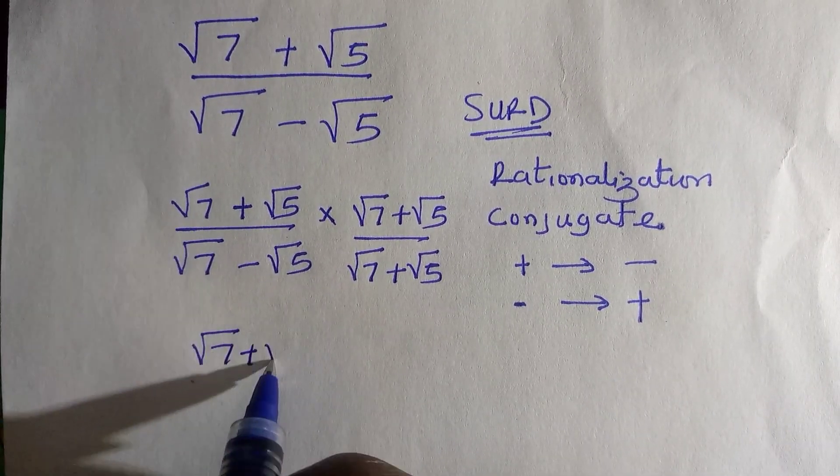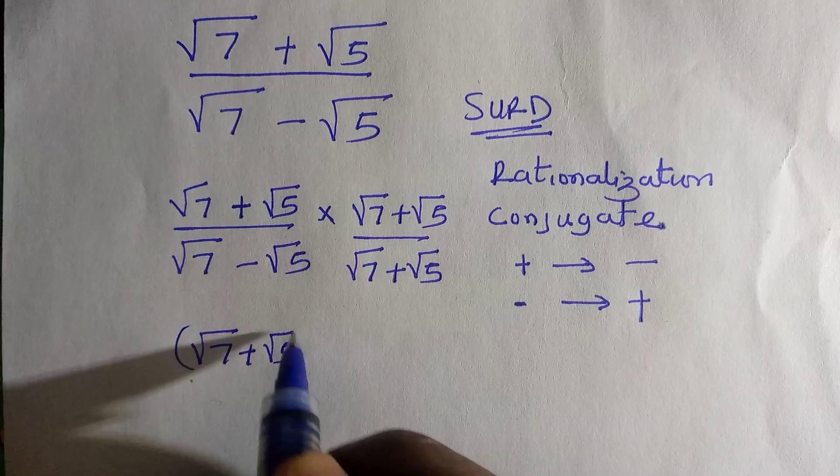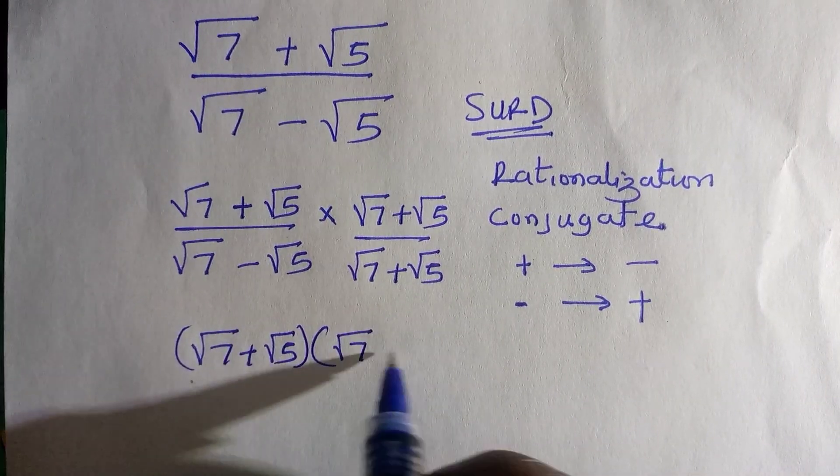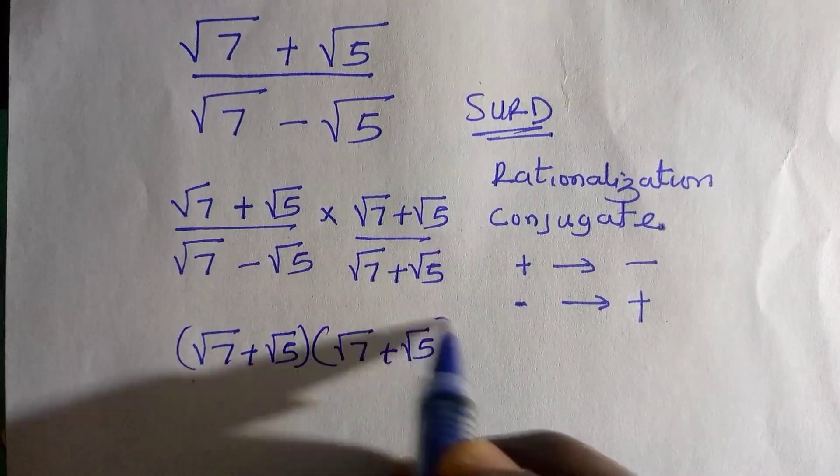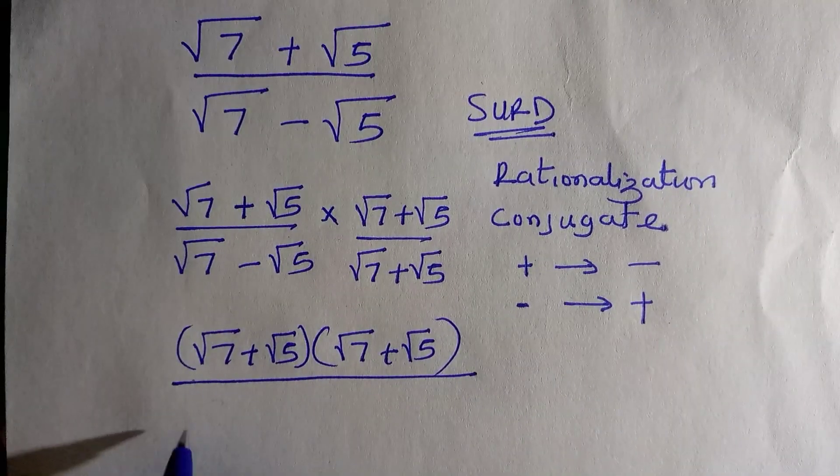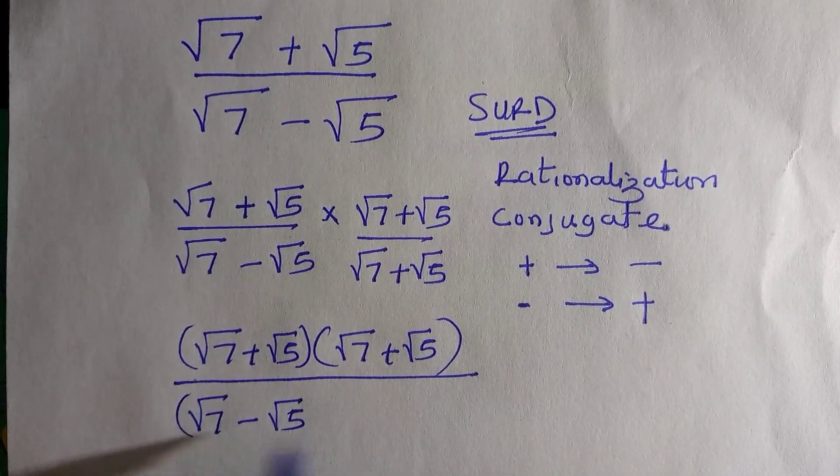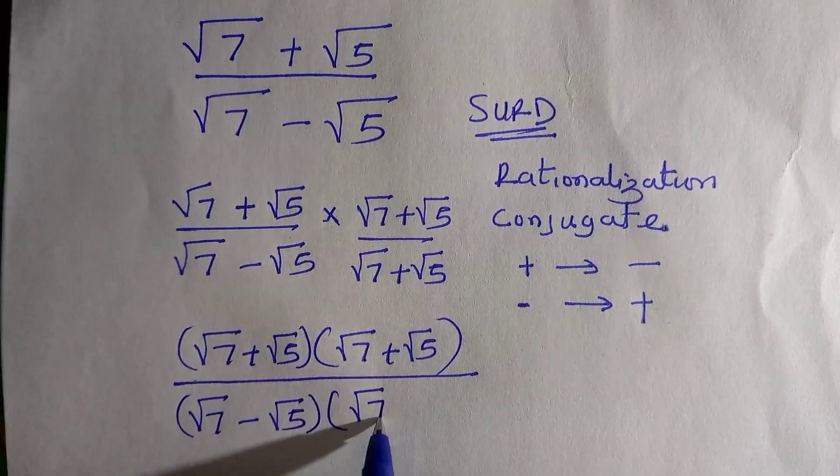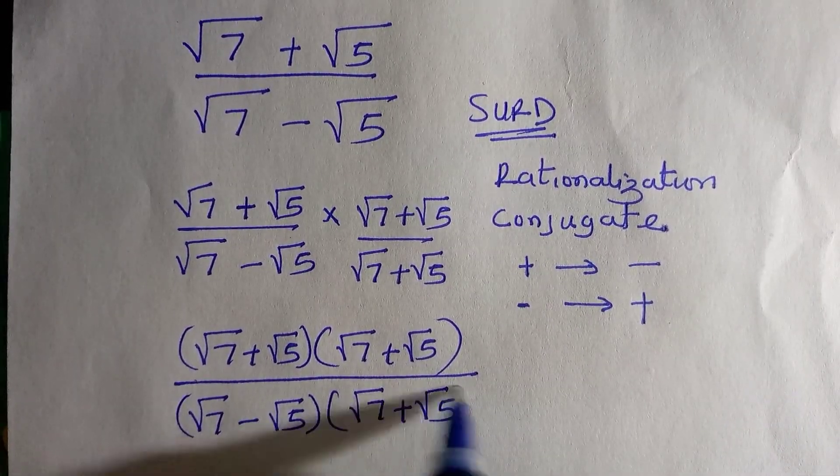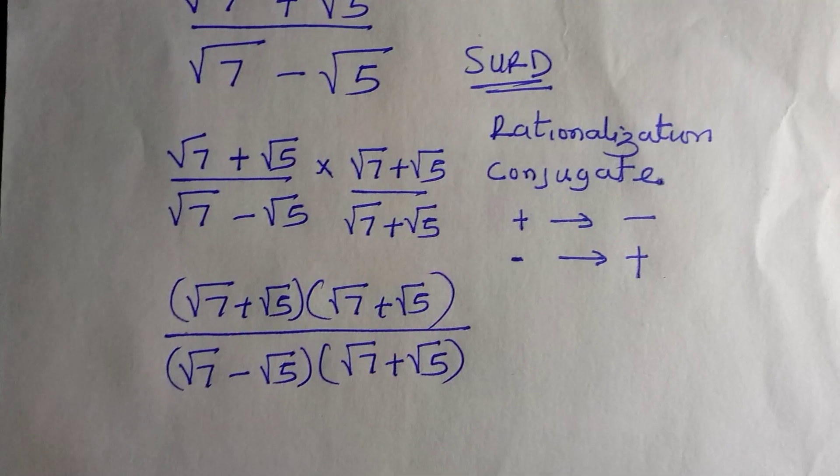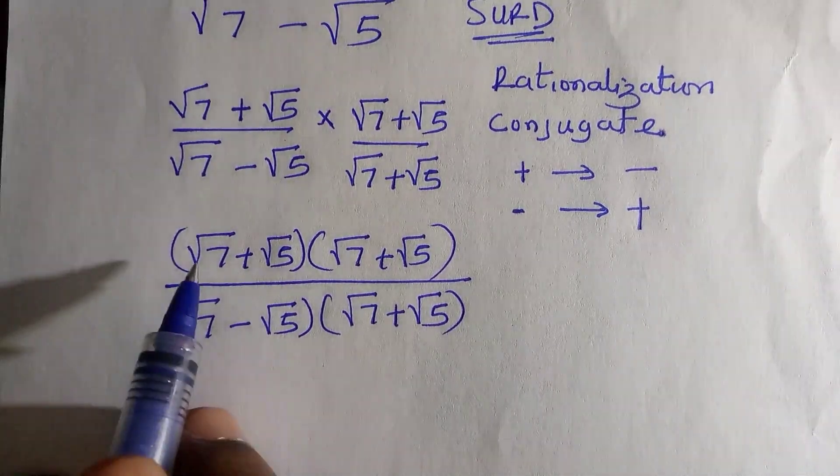Here we have (√7 + √5)(√7 + √5) divided by (√7 - √5)(√7 + √5). Now we can start expanding.